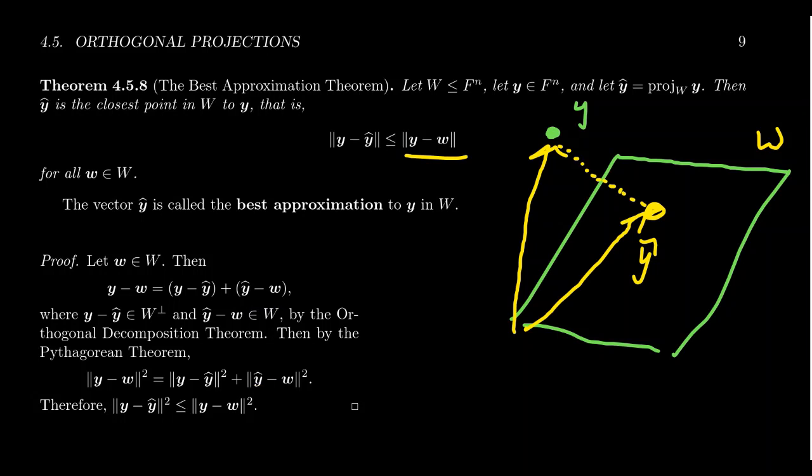Now, these are all non-negative quantities because our norm satisfies this positive definite condition. If I were to remove some positive quantity on the right-hand side, that makes the right-hand side get smaller, and so we no longer have equality. We have an inequality. The norm of y minus w squared is greater than or equal to the norm of y minus y-hat squared. Taking the square root, we've then established the inequality given to us by the best approximation theorem.